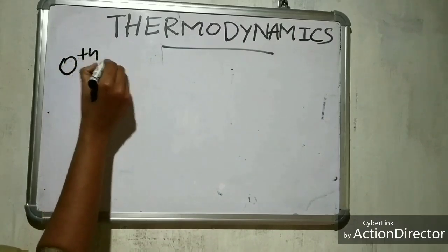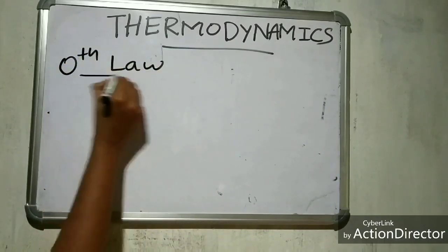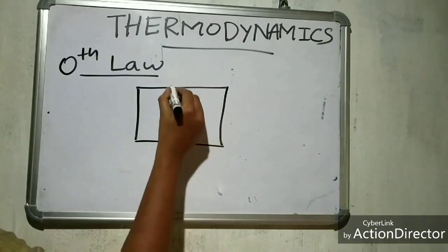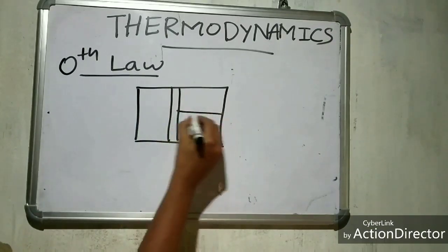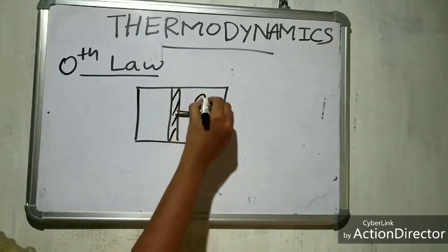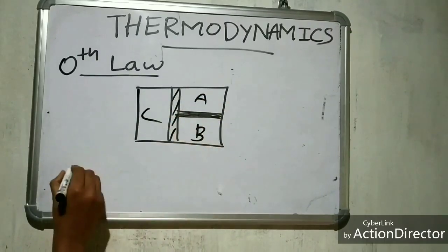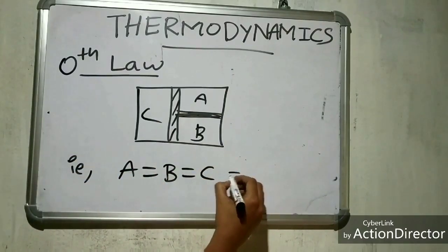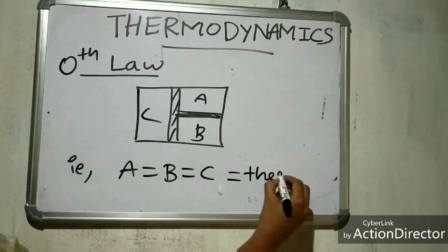Zeroth law states that if two thermodynamic systems each in thermal equilibrium with a third one, then they are in thermal equilibrium with each other. Here the three systems are A, B, C, that is A, B, C are in thermal equilibrium.